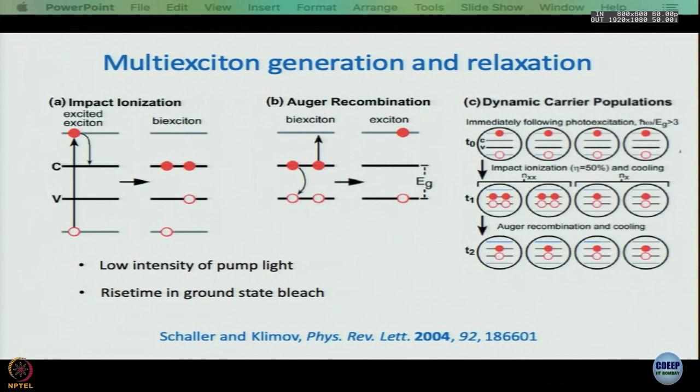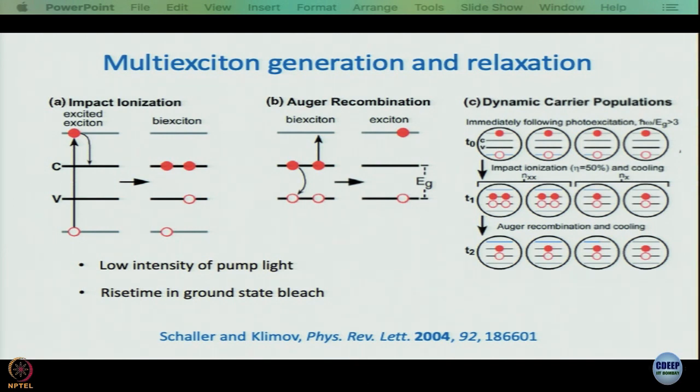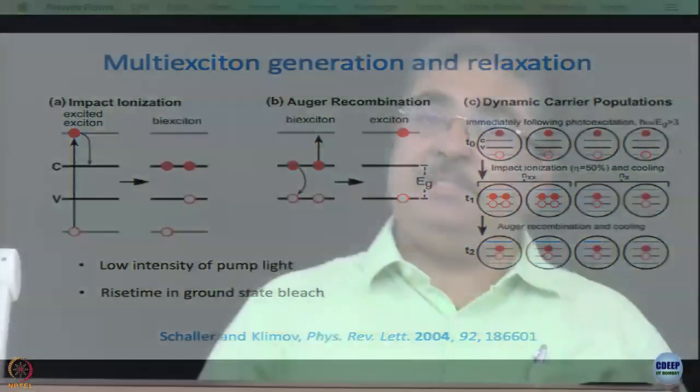Returning to our main topic: one can generate a hot exciton by promoting an electron to a higher energy state; when the hole is in a lower level, that hot electron cooling can generate a biexciton, which can then undergo Auger recombination to form regular excitons. This shows up as a fast decay in transient absorption when pumped at high energy — that is, pumped at shorter wavelengths. When excitation is performed at lower wavelengths, this phenomenon is observed; at longer wavelengths it is not.